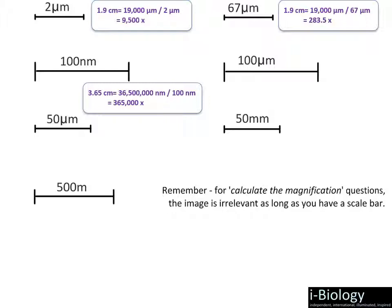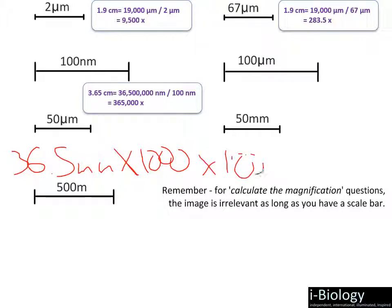The next one involves nanometers. Nanometers is the next smallest value from micrometers — there are 1000 nanometers in one micrometer, just as there are 1000 micrometers in one millimeter. If you measured this to be about 3.65 centimeters — that's 36.5 millimeters — multiply by 1000 to get micrometers, then by 1000 again to get nanometers. That gives you 36.5 million nanometers, divided by 100 nanometers from the scale bar, giving 365,000 as your magnification value.